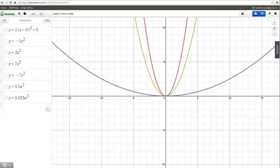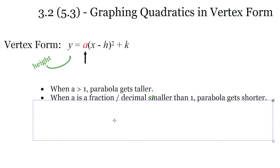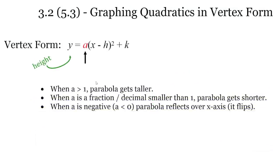So let's go back to our slides. When a is greater than 1, the parabola got taller. When a is a fraction or decimal smaller than 1, like 0.5, the parabola gets shorter. The byproduct of those two is that it got thinner then wider respectively. And when a is negative or less than 0, the parabola reflects over the x-axis — it flips around.